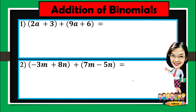In here, we're going to add binomials. For number 1, 2a plus 3 plus 9a plus 6. So we can add this horizontally by combining similar terms. 2a plus 9a gives 11a. 3 plus 6 is 9. So the answer is 11a plus 9. That is how we add binomials horizontally.